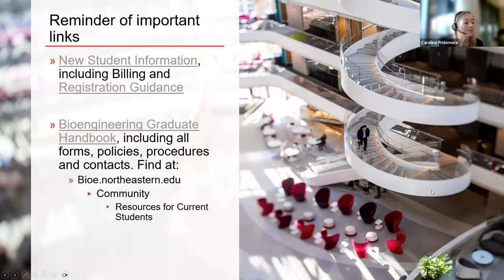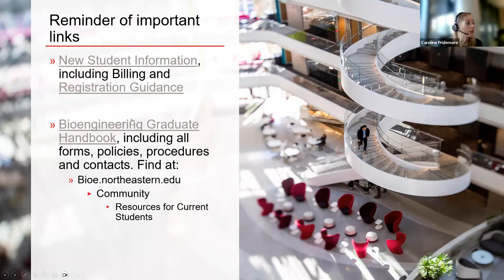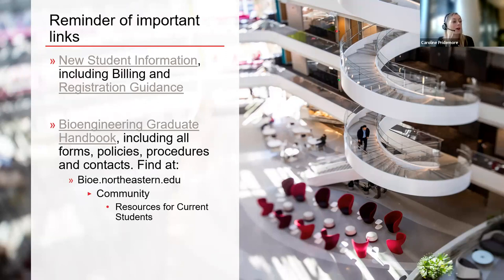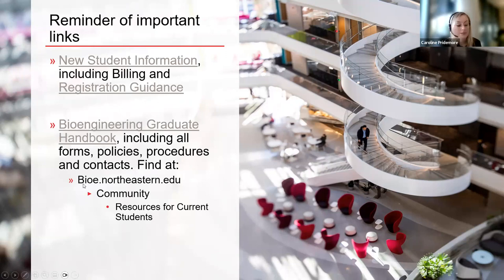A couple of important links: from the admissions team you should have received new student information and registration guidance, with a section specifically for master's students giving detail on what we suggest you enroll in your first semester. The bioengineering graduate handbook — those of you whose student emails are active may have received an email recently with the new handbook. It's a very detailed document with master's and PhD program information, course guidance, and links to forms. It's a good place to check when you have a question. You can find it on the bioengineering website under the community section and resources for current students.